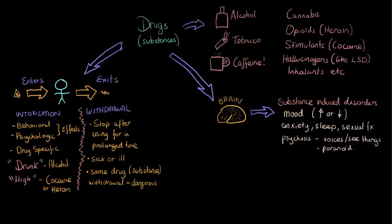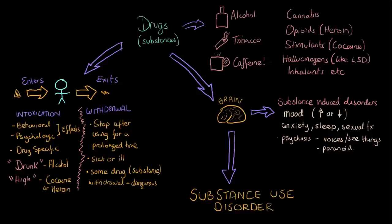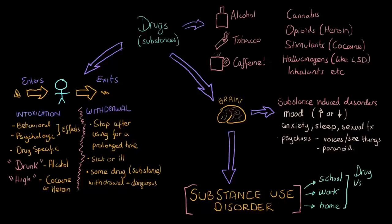We may also get problems with something called psychosis, which is a loss of contact with reality — where people can hear voices, see things, or become very paranoid. When these drugs affect the brain, something completely different may also happen: we can see the development of a substance use disorder. Not everybody that uses a substance develops a substance use disorder, which basically implies that their use is causing them a real degree of impairment — really affecting the way they function in their life, whether that's at school, work, or home.